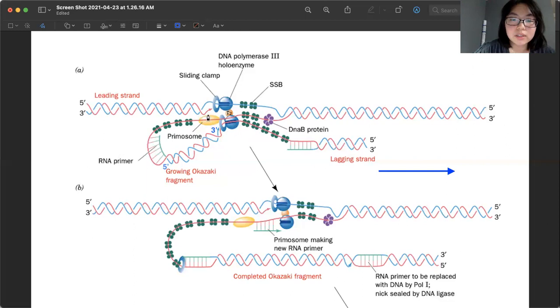And so we also have this primosome over here that will help us put this RNA primer onto the single-stranded parent strand, because in order for synthesis to occur, we need an RNA primer, which technically, there should have been an RNA primer on the leading strand as well at the very beginning, but we don't see it here.